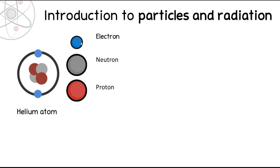The electron is actually the smallest of these subatomic particles, meaning it has the lowest mass. The neutron and the proton have about the same mass. Now, talking about charge: the electron has a negative charge, the neutron has no charge, and the proton has a positive charge. So the nucleus has an overall positive charge, the outside has an overall negative charge, and that's what holds it all together.